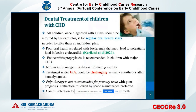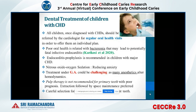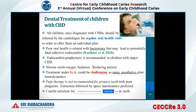For dental treatment of children with congenital heart disease, once the disease is diagnosed the consulting physician or cardiologist should refer the child to a pediatric dentist for regular oral health visits so that a good preventive treatment plan can be made. These children are highly predisposed to bacteria that can lead to fatal infective endocarditis; therefore endocarditis prophylaxis is recommended for children with major congenital heart disease. Nitrous oxide oxygen sedation should be used to reduce anxiety. Treatment under general anesthesia is challenging as many anesthetics alter the hemodynamics of the body and should only be done in a tertiary care center with the consent of the cardiologist and hematologist. Pulp therapy is not recommended for primary teeth with poor prognosis, and careful selection should be done for permanent teeth prior to starting any pulp therapy.